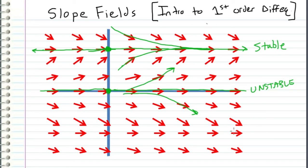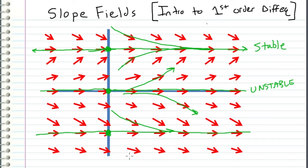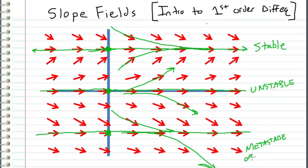There is also something called metastable, or semistable, which occurs when the initial condition is, for example, y(0) equals negative 2. In that case, everything above the solution feeds into it — which is good — but everything below causes the function to diverge. So we call that metastable or semistable.